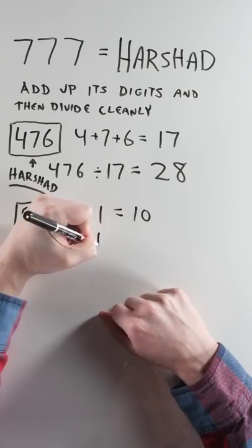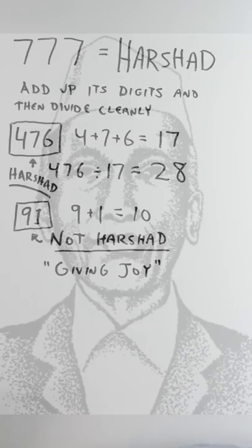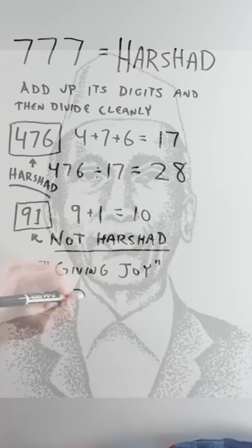Harshad is Sanskrit for giving joy. Capricar said there is great joy in creating these numbers, divisible by the sum of their digits, and you can construct harshad numbers by reverse engineering a value like 31 and finding a number whose digits add up to it and that's divisible by it.